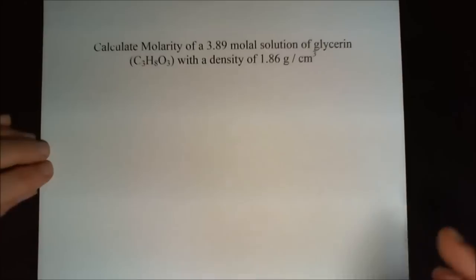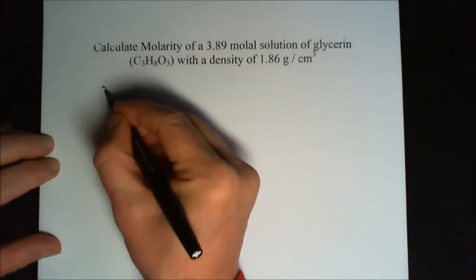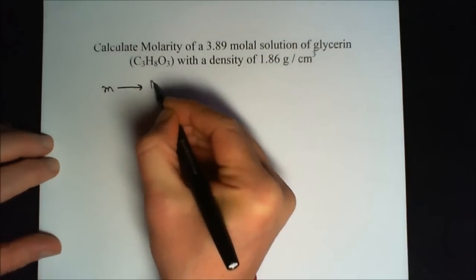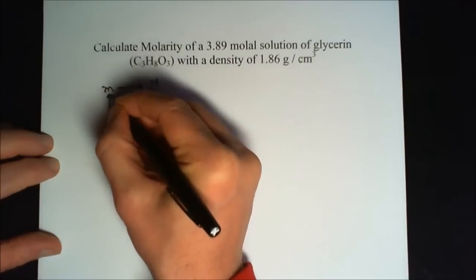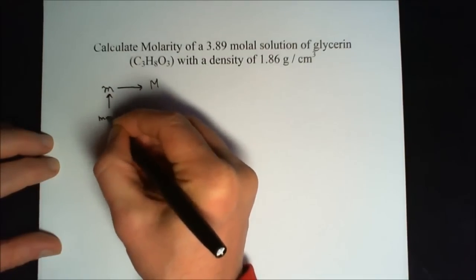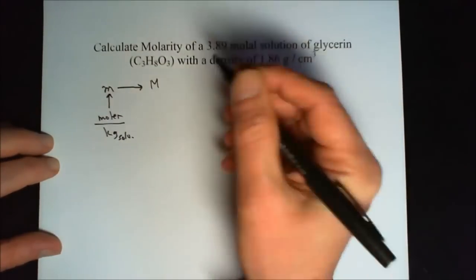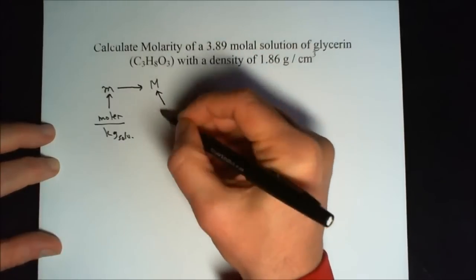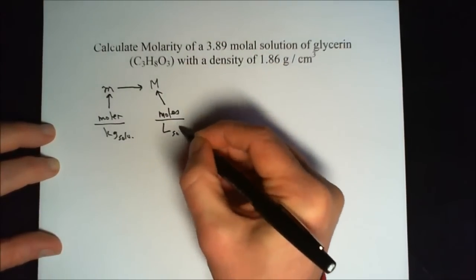What we're asking for is big M from little m. We want to go from little m to big M. Little m, which is molality, is given in moles per kilogram of solvent, whereas molarity is moles per liter of solution.